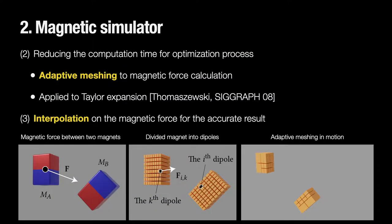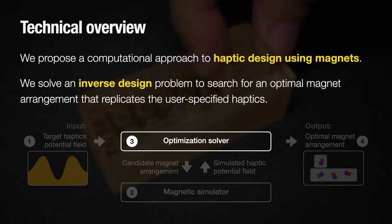Second, we improved the magnetic simulator to reduce the computation time. It was necessary for iterative calculation in the optimization process. We applied adaptive meshing to the Taylor expansion of magnetic force calculation. And we also applied interpolation on the magnetic force for the accurate result.